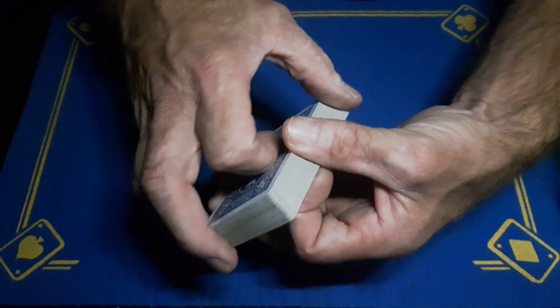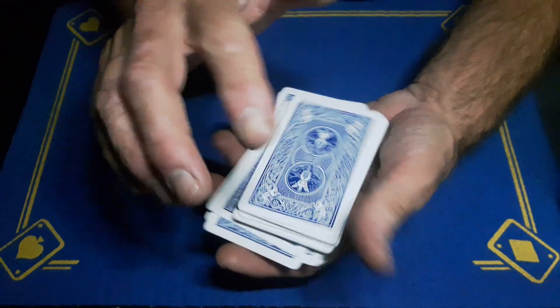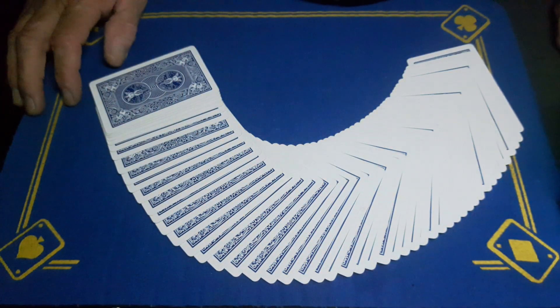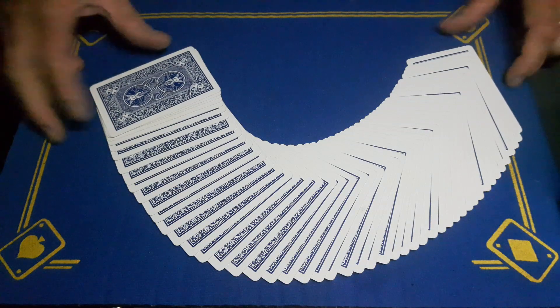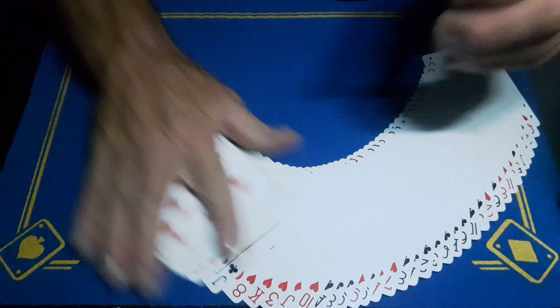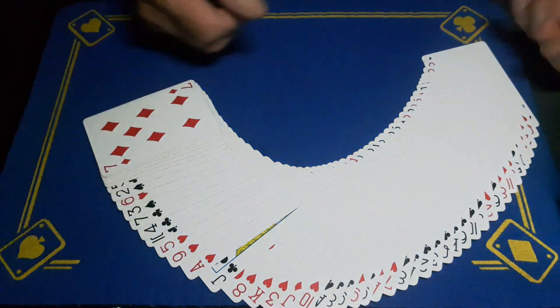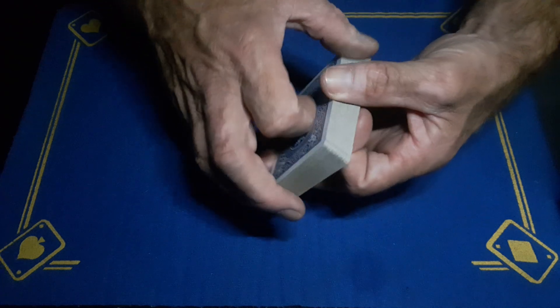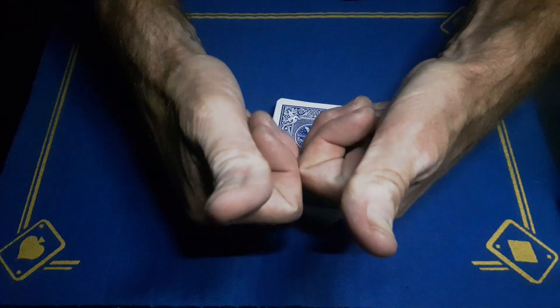So that is Gaffer's Faro shuffle tutorial. Let me know if this has been helpful, let me know if it hasn't been helpful, whatever. Just make sure to give me a thumbs up guys, that really does help with the algorithm apparently, I'm just saying what I've heard. And come back tomorrow for another card trick. Cheers.